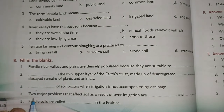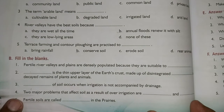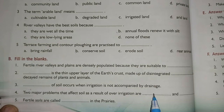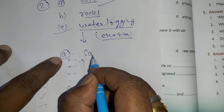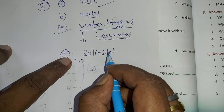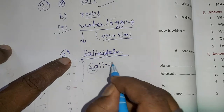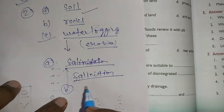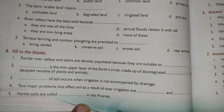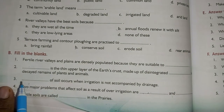The fourth fill in the blank: two major problems that affect soil as a result of over-irrigation are? The answer is water logging and salinization. So the two major problems caused by over-irrigation are salinization and water logging.